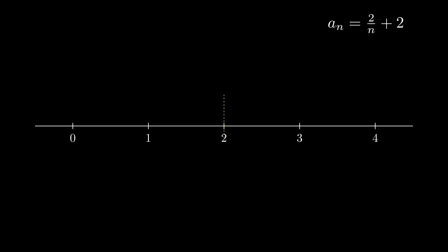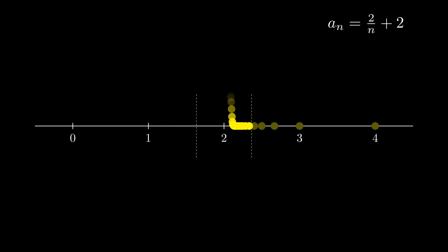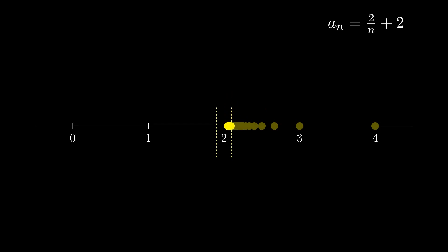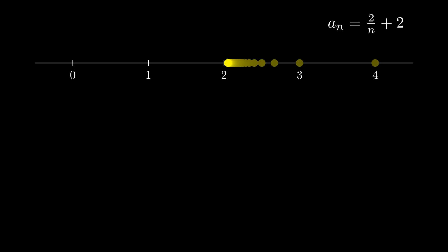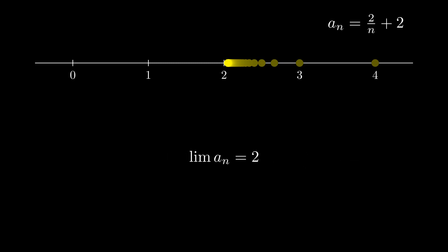Another useful way to visualize this convergence is on a number line where if we choose any distance around 2, then we should be able to find a point in the sequence where all the points at and after it should be trapped within these bounds. This visualization also lines up a lot more closely to our original idea of using an infinite number of steps to approach a value. Using our previous example, we can notate this convergence property as follows, saying the limit of the sequence a_n equals 2, or more explicitly, the limit of the sequence 2 over n plus 2 equals 2. This notation looks a lot like the limit notation we first introduced, and that's no mistake. In fact, this notation is shorthand for the limit as n approaches infinity of the sequence a_n equals 2.